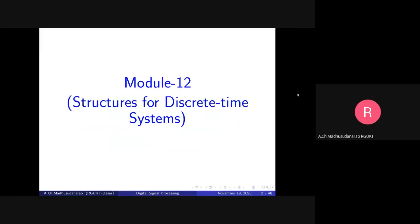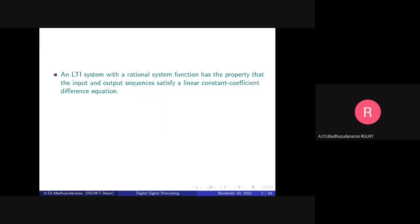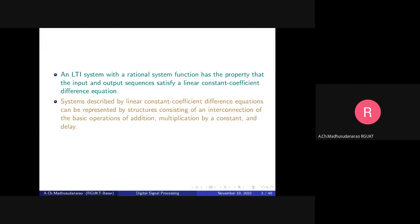Good morning. Today we are going to discuss structures for discrete time systems. We will look into how to implement discrete time systems. Every system with a rational system function has the property that the input and output sequences satisfy a linear constant coefficient difference equation. Systems described by linear constant coefficient difference equations can be represented by structures consisting of interconnections of the basic operations of addition, multiplication by a constant, and a delay.